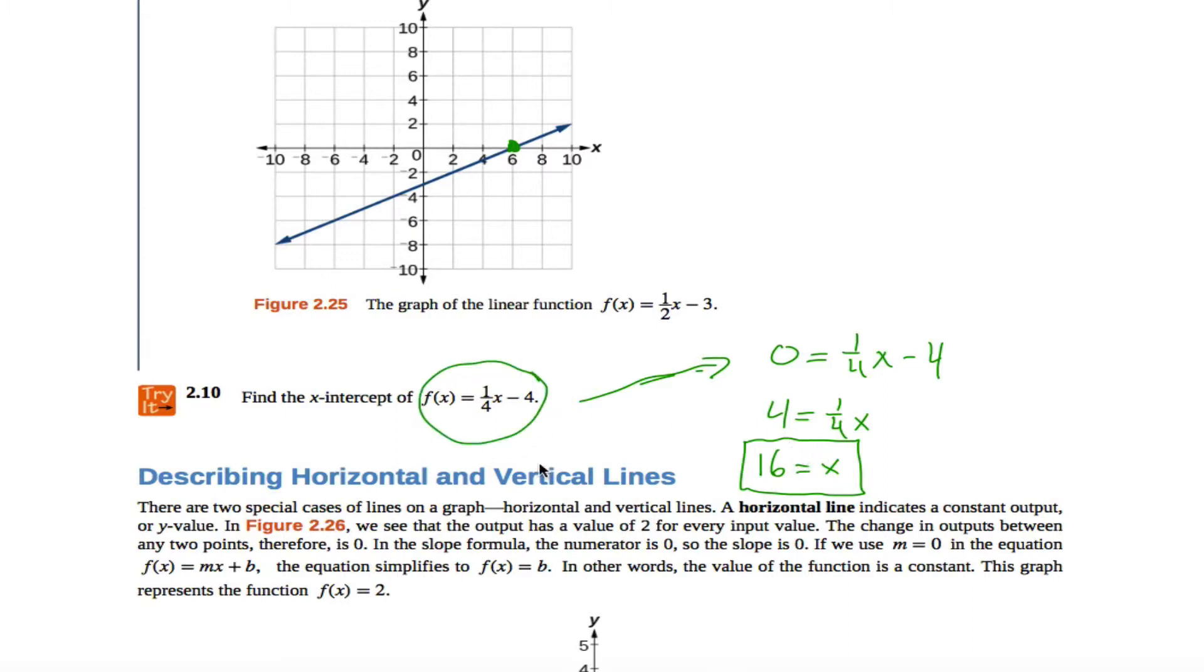If I were graphing this thing right here, I'd say its y-intercept is negative 4, so I want to start right here. And then from there, I want to go up by 1, so up by 1 I'm at negative 3, and over by 4, over to the right by 4, so right here. So I have this dot and this dot, which is enough to completely describe my linear function. So I connect them with the straight line.